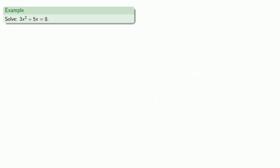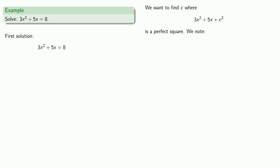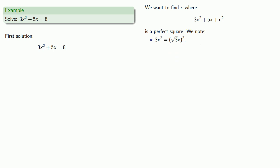Now let's try 3x squared plus 5x equals 8. There are actually three different ways to solve this by completing the square. If we don't want to think about the problem at all, we want to find c where 3x squared plus 5x plus c squared is a perfect square. The term 3x squared needs to be the square of something — specifically the square of the square root of 3 times x. This introduces square root of 3, which will show up throughout the rest of the problem.